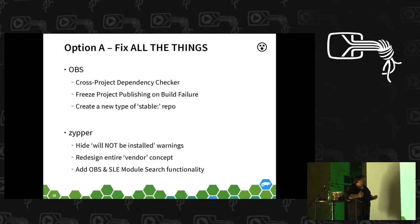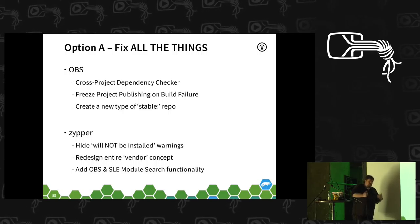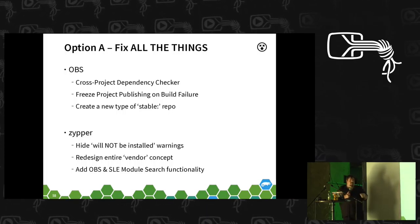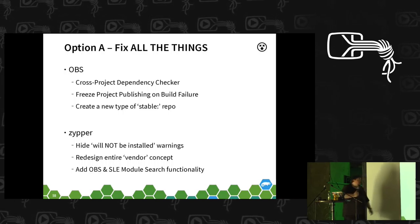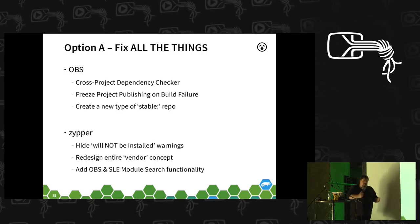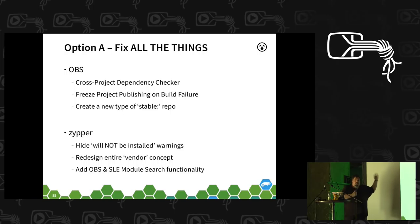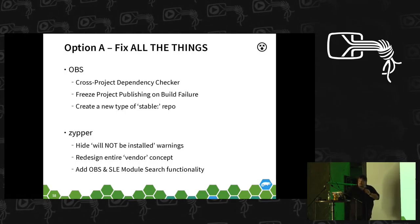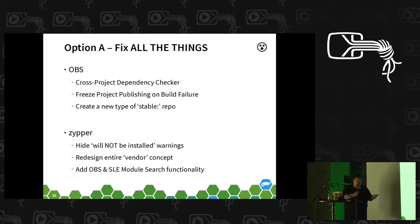Or maybe we need a new type of repo. We have the main official repositories, home repos for everybody to do anything they want, and develop repos for building distributions. Maybe we need a concept of a stable repo where we can say this stuff has been checked in some sense — it's been built properly — and users can use stable. Maybe we need to get rid of the 'will not be installed' warnings. The vendor concept is one of our greatest things but also causes confusion, so maybe we need to smooth it out. For example, maybe stable repos would be built under the OpenSUSE key.